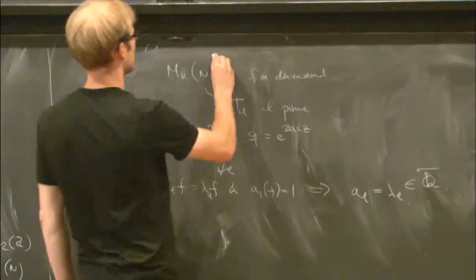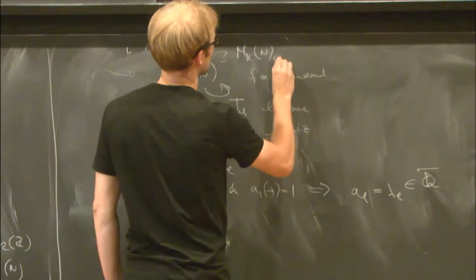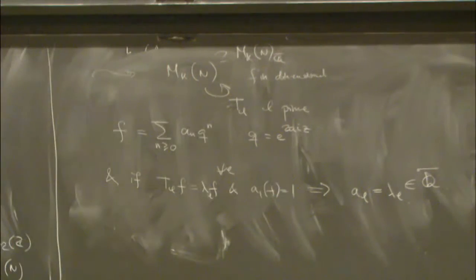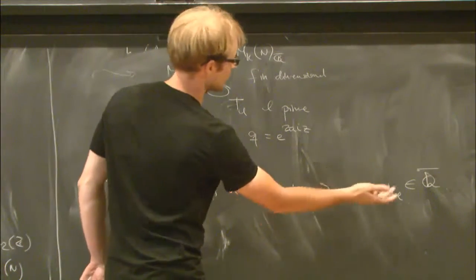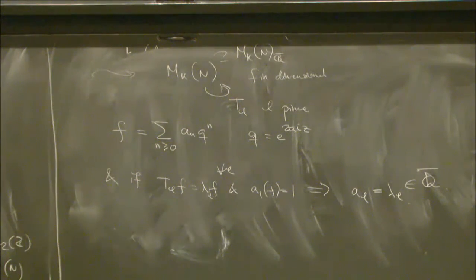So in particular, I can define some kind of, there's sort of a natural Q-bar structure on this vector space, which is simply what you get by taking the span of these eigenforms.